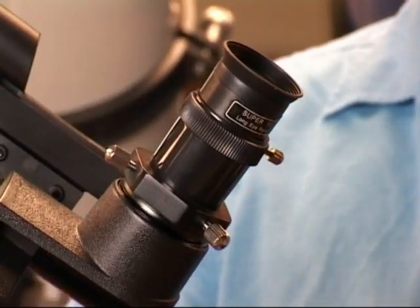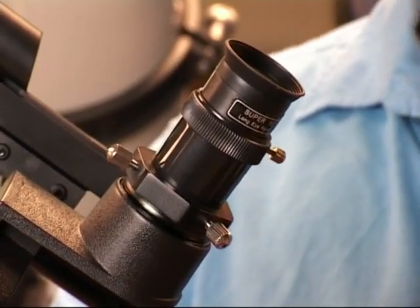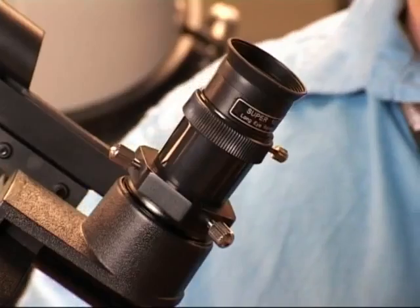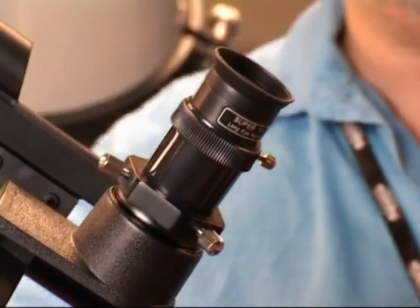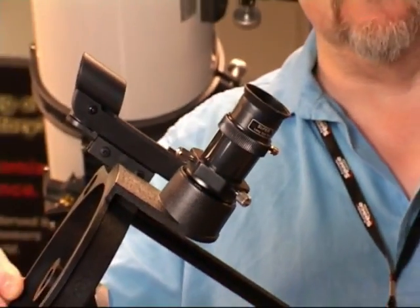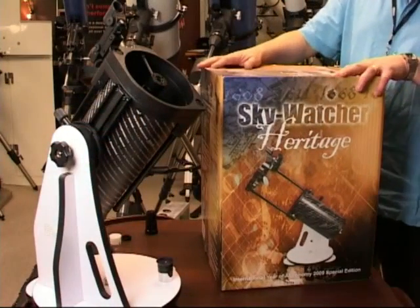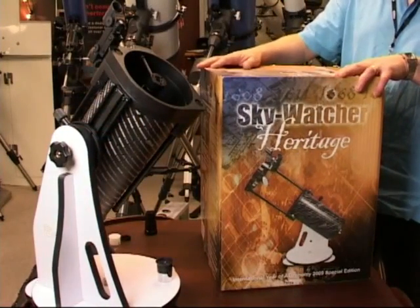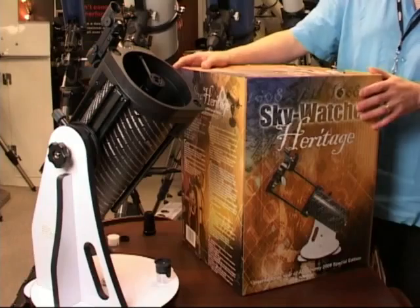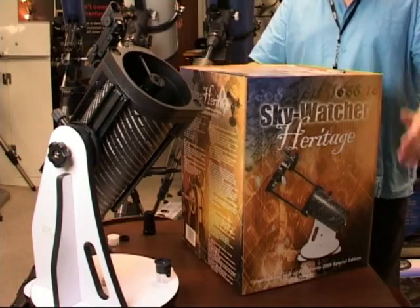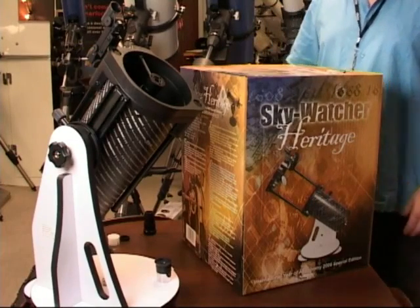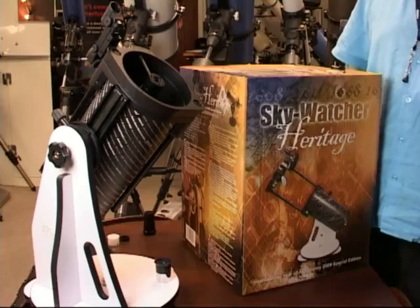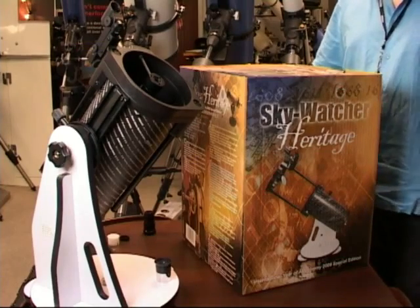And you can use other eyepieces, not included with the telescope, to take that magnification all the way up to a higher magnification of 260 times for homing in on the fine detail on Jupiter and the rings of Saturn and lunar craters. As you can see it comes packaged in this rather nice picture box, making it I think an ideal gift. And that's the Heritage 130P Dobsonian Starter Scope.